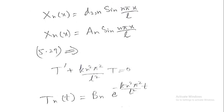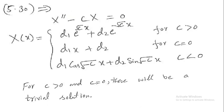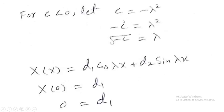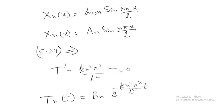The solution for X is: Xₙ(x) = aₙ·sin(nπx/L). This is the solution to equation 5.30. Now we have calculated the value of c, and substituting this into equation 5.29 for T(t).